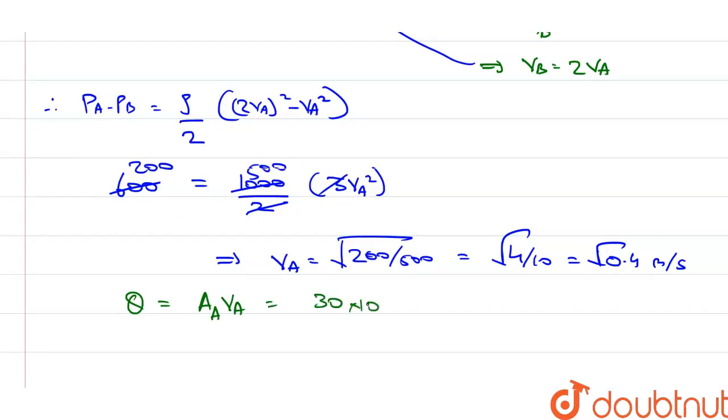30 into 10 to the power minus 4 meter square into 0.4 root meter per second. This becomes equal to 1890 into 10 to the power minus 6 meter cube per second, or in centimeter cube per second we can write it as 1890 centimeter cube per second. This is the volume flow rate.